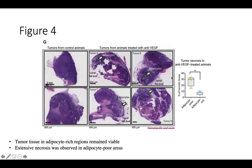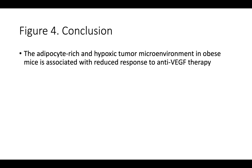Figure 4 also showed high necrosis in areas with fewer adipocytes, whereas areas with high adipocyte numbers had viable, actively proliferating cells. Quantification confirmed significantly lower percentage of necrotic tissue in adipocyte-rich areas compared to adipocyte-poor areas. The conclusion for Figure 4 is that the adipocyte-rich and hypoxic tumor microenvironment in obese mice is associated with reduced response to anti-VEGF therapy.